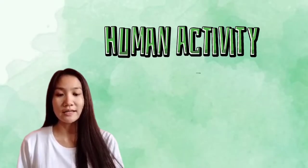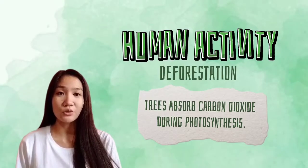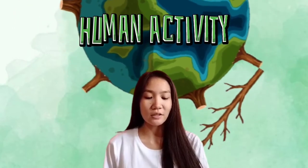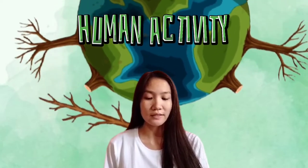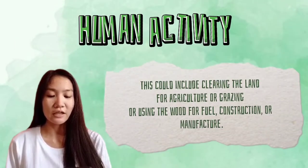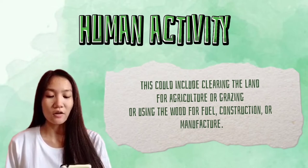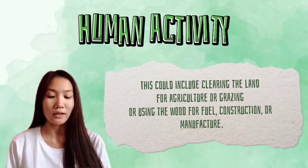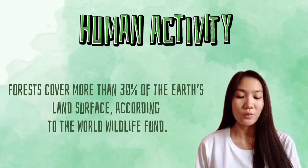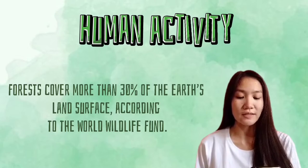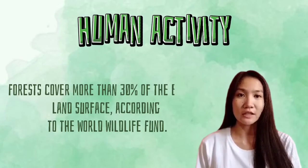Next is deforestation. Trees absorb carbon dioxide during photosynthesis. If they are cut down, there will be a higher amount of carbon dioxide in the atmosphere. Deforestation is the permanent removal of trees to make way for something other than the forest, such as clearing land for agriculture, grazing, or using wood for fuel, construction, or manufacture. Forests cover more than 30% of the Earth's land surface, according to the World Wildlife Fund.